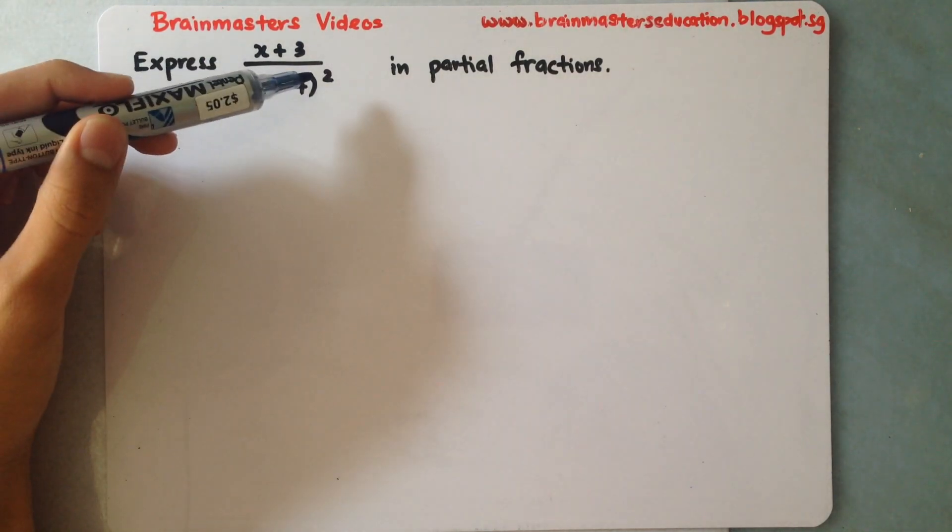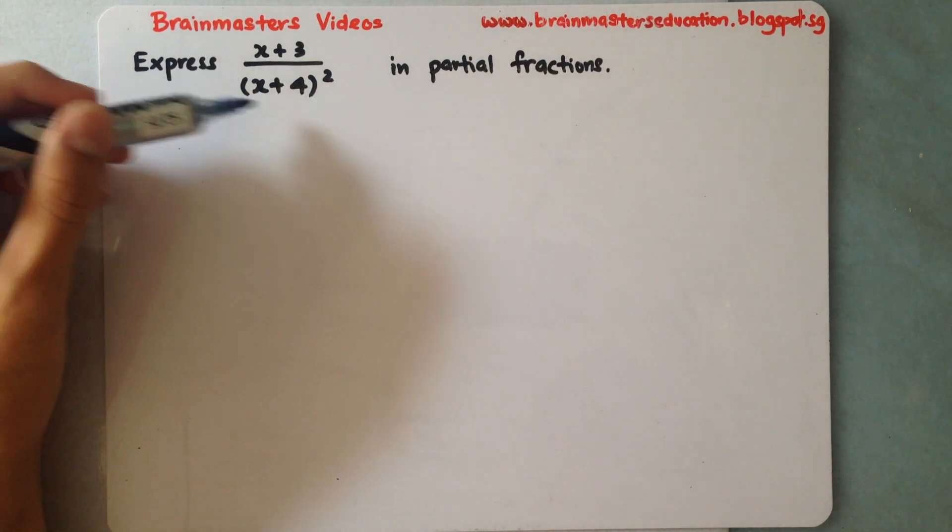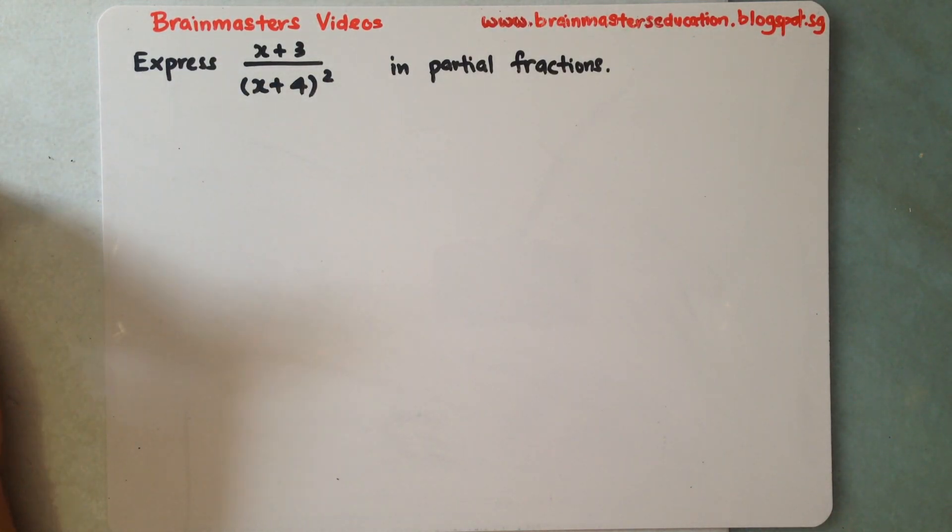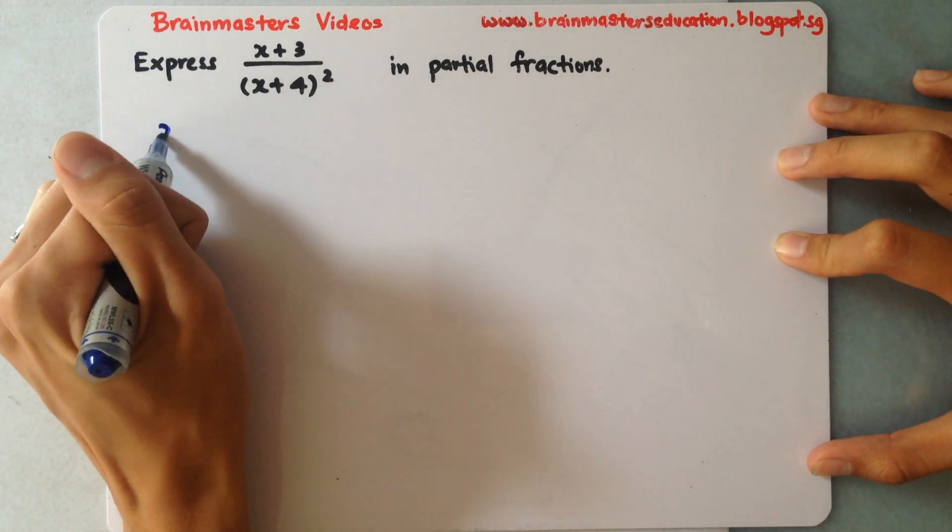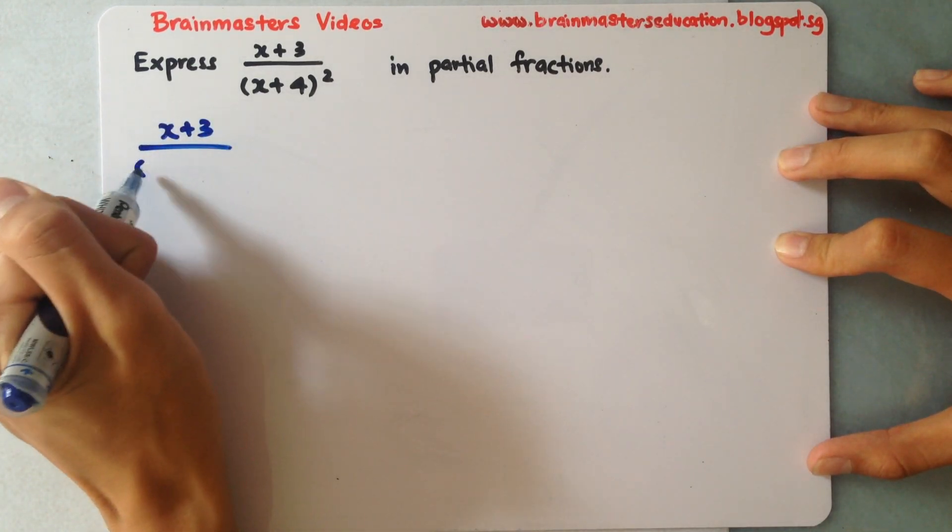This is the question: Express (x+3) over (x+4) bracket square in partial fractions. Remember when identifying your partial fractions, you have to separate them out into two different fractions.